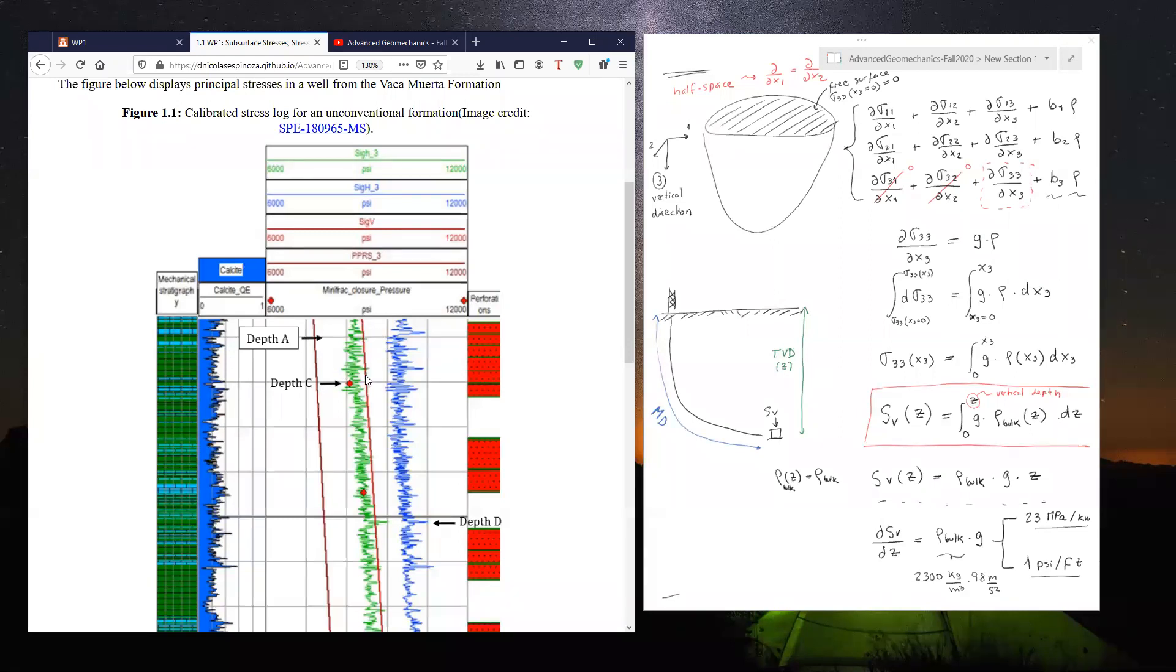The third track is a combined track with pore pressure here in brown, minimum horizontal stress in green, vertical stress in red, and maximum horizontal stress in blue.